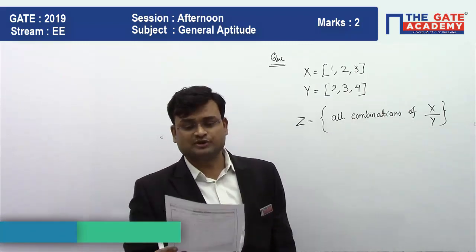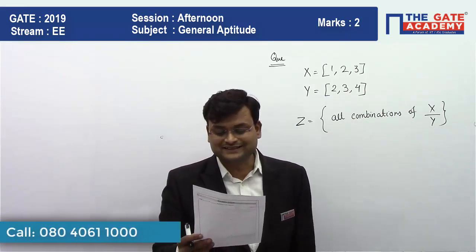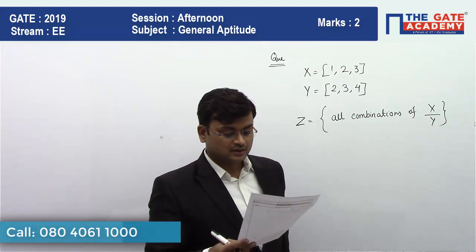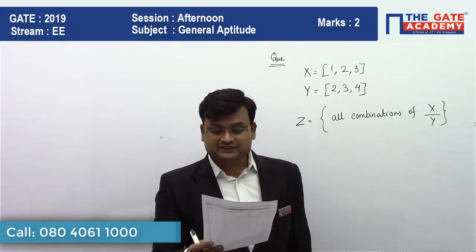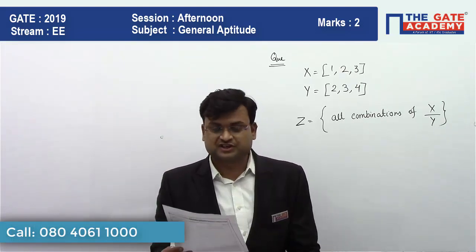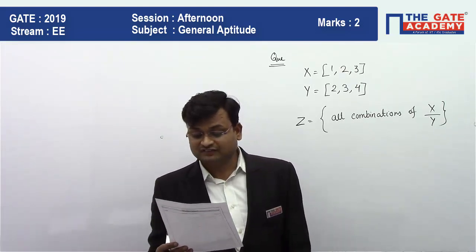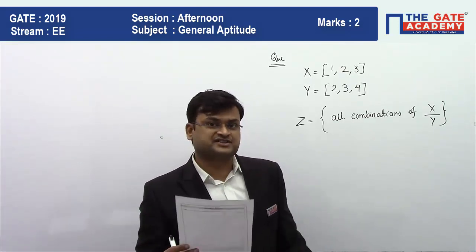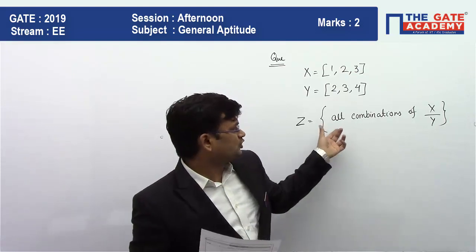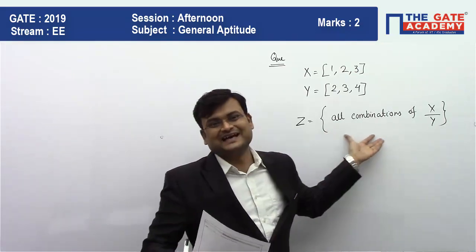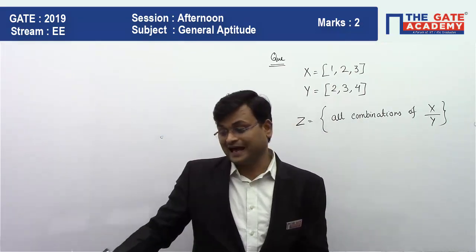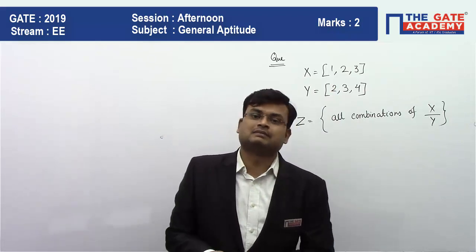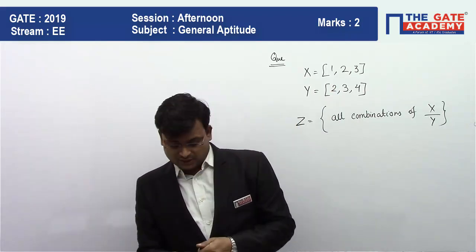So it is given in the question that x is the numerator and y is the denominator. The question asks for the product of elements having the minimum and maximum values. So we need to find all values in this set and then multiply the minimum value and the maximum value.